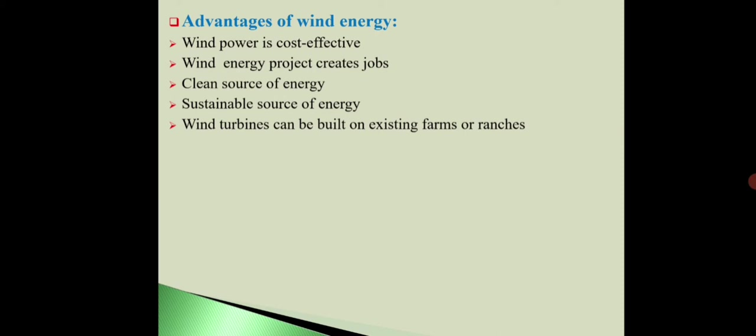It is abundant and natural. It does not deplete like other sources, so it is sustainable. Wind turbines can be built on existing farms or ranches. This means wind energy projects do not require a lot of land. In the farm, at one corner we can install these wind turbines and towers. We can use this land for other purposes also.